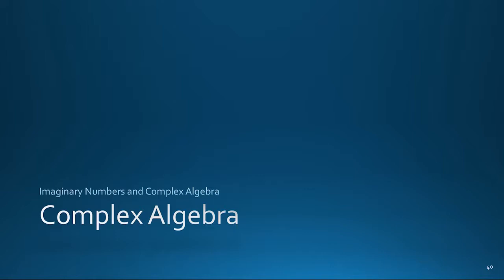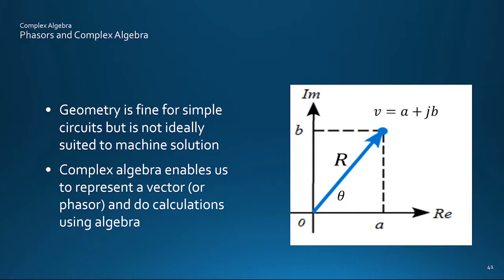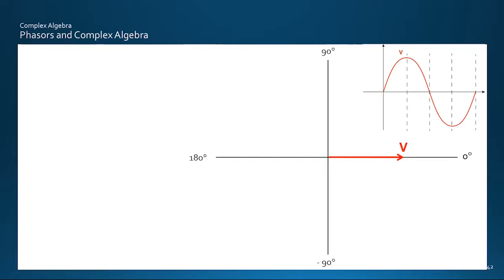OK then, working with phasers using geometry and trig is a lot easier than trying to cope with either sine waves or trig alone. So how can complex algebra make it even easier? Well, geometry is fine for simple circuits and systems, but things can get a bit tangled in complex problems where a bit of machine help would also be useful. Complex algebra enables us to capture the geometry of a phasor by wrapping up its two quantities of magnitude and phase angle into one variable that can be simply processed on paper or by computer.